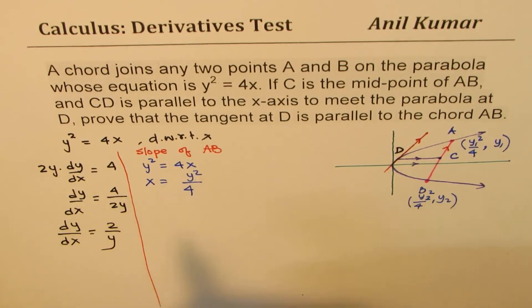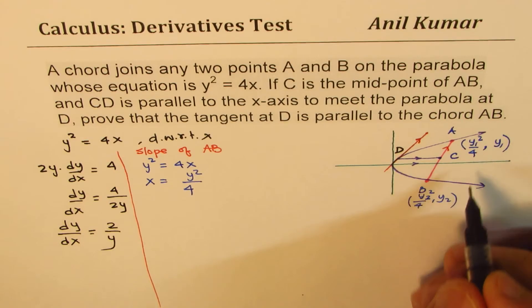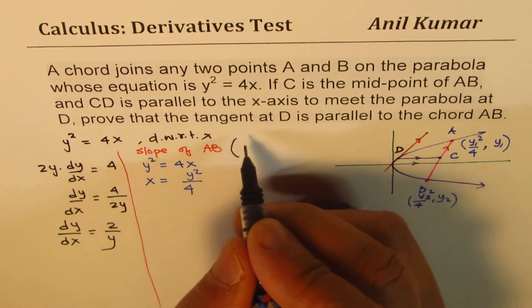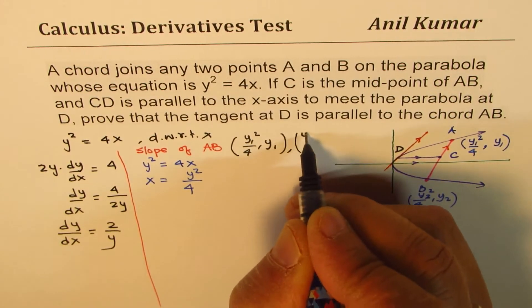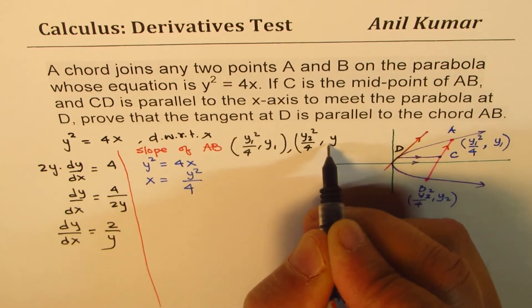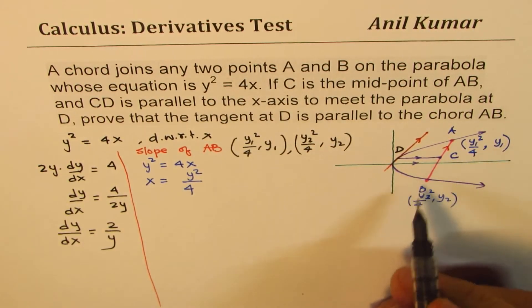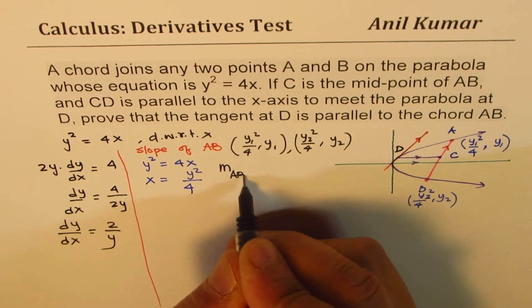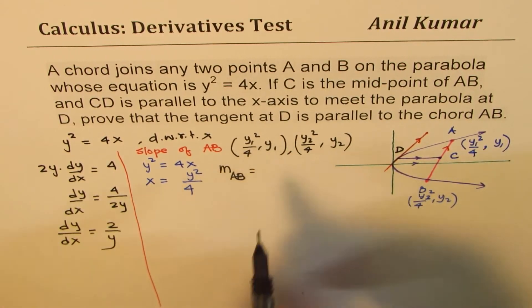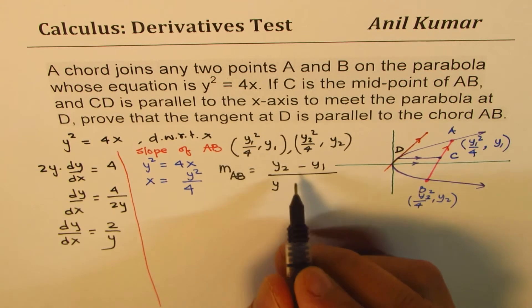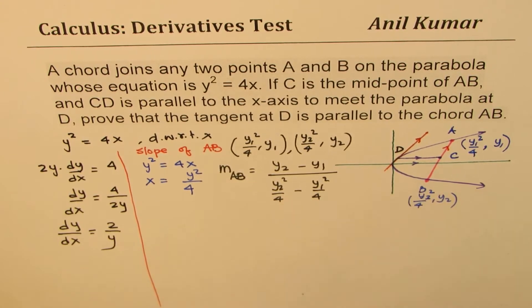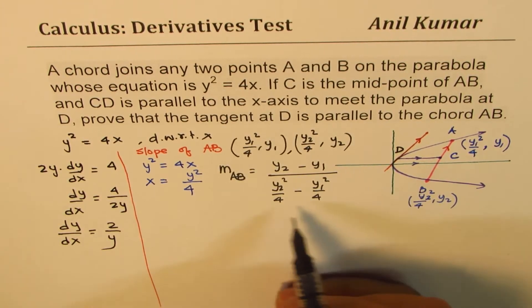Since we know these coordinates now, we have these two coordinates: (y₁²/4, y₁) and (y₂²/4, y₂). We can write slope AB is difference of y values, which are y₂ - y₁, over difference of x values, which are y₂²/4 - y₁²/4.